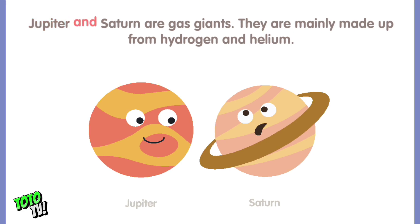Jupiter and Saturn are gas giants. They are mainly made up from hydrogen and helium.